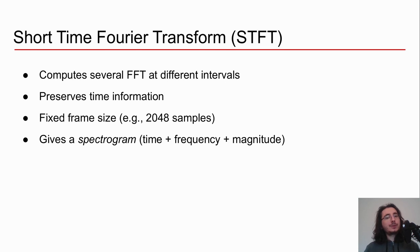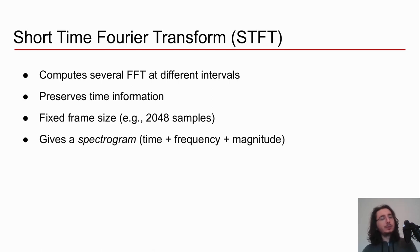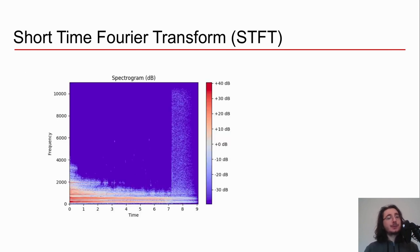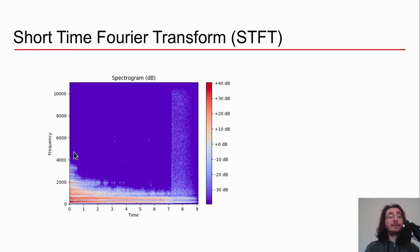The solution is called the Short-Time Fourier Transform, or STFT. What the STFT does is compute several Fourier transforms at different intervals — and in doing so, it preserves information about time and how sound evolves over time. The different intervals at which we perform the Fourier transform are given by the frame size. A frame is a fixed number of samples — for example, 2048 samples — over which we compute the Fourier transform. We then shift and move on through the rest of the waveform. The result is a spectrogram: a representation that gives us magnitude as a function of both frequency and time.